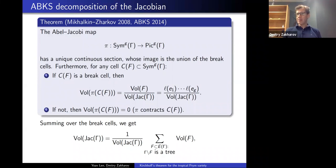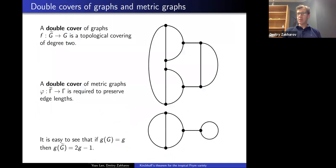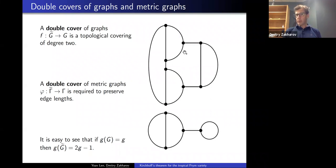Now I want to talk about a version of all these results for the tropical Prym variety. First let's discuss double covers. A double cover of graphs is the naive notion: you treat the graph as a topological space and look at a covering space of degree two. Any such cover is Galois. For double covers of metric graphs, I also require the map be a local isometry, so edge lengths in the covering graph are induced from the target. If the target graph has genus G, then the source graph has genus 2G − 1, exactly as in the algebraic setting.